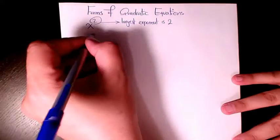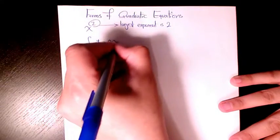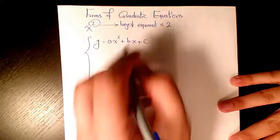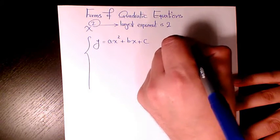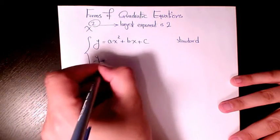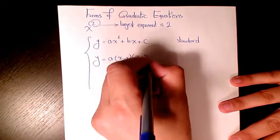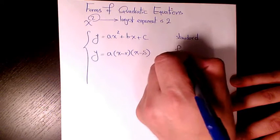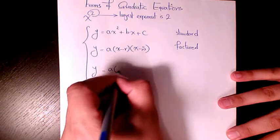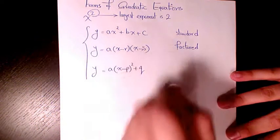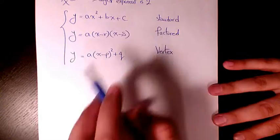We have three different forms of quadratic equations. The first one is called standard or general form: y equals ax squared plus bx plus c. The second one is a times (x minus r) times (x minus s), that's called factored form. And the last one is a times (x minus p) to the power of 2 plus q, and this one is called vertex form. So: standard, factored, and vertex form.